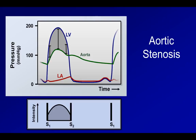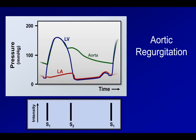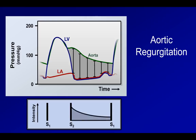Here is an example of such a crescendo-decrescendo murmur of aortic stenosis. [audio clip] This same analysis can be applied to every heart murmur. For example, here is aortic regurgitation. [audio clip] The turbulent flow here occurs during diastole when there is a pressure gradient between the aorta and the left ventricle. During the course of diastole, as blood flows backwards from the aorta into the LV, the pressure in the aorta decreases and thus the pressure gradient also decreases. This shape is known as decrescendo.